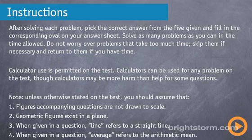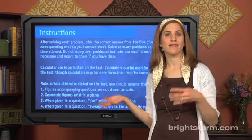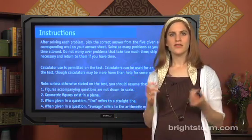Next, geometric figures exist in a plane. Nothing funky here. It's going to look like high school math. When given in a question, line refers to a straight line, and when given in a question, average refers to the arithmetic mean. So a mean is the same thing as average. So that's instructions.